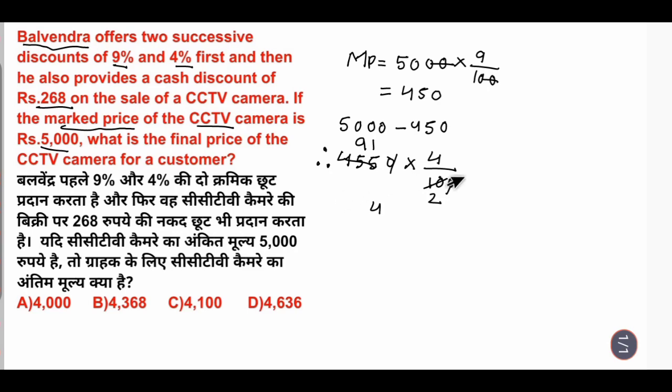This is canceling, 2 into 1 is 2, 2 times 2 is 4. This is canceling 2 into 1 is 2, 2 times 9 is 18. 182.